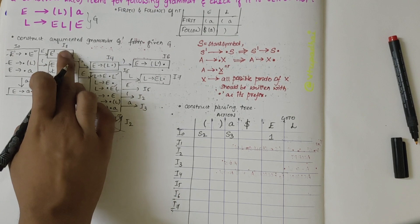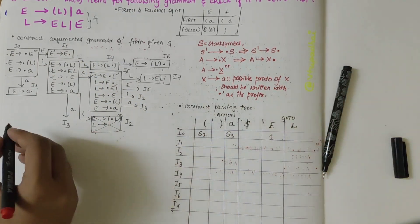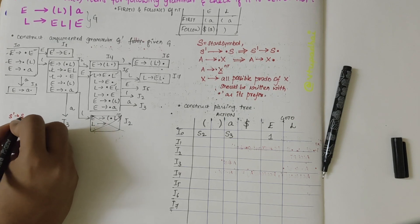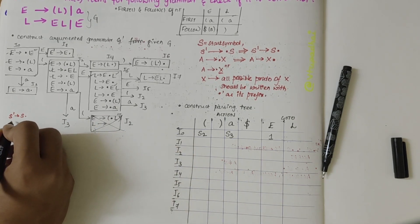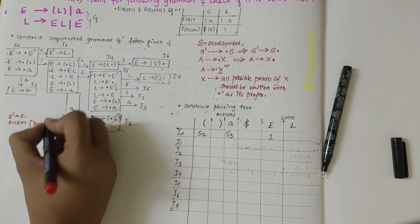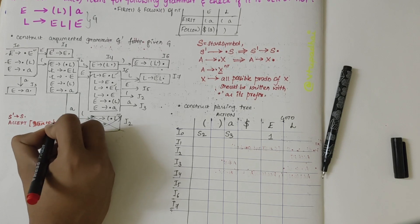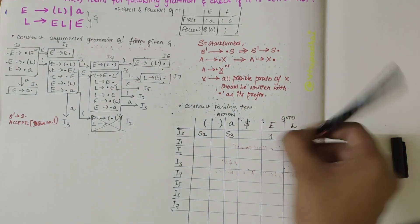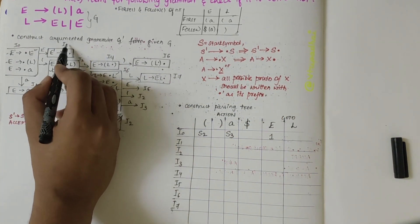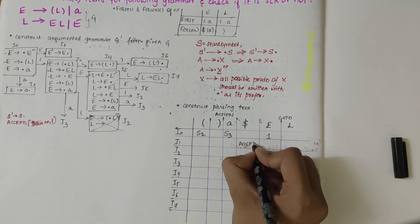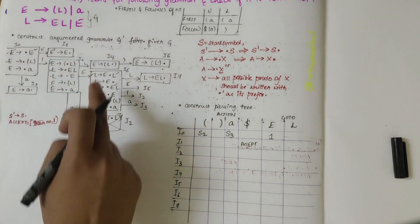Moving on to I1. One thing to remember: if you have a production of the form S dash derives S dot, then in action of that item number comma dollar, you should write accept. E dash derives E dot is in I1, so I1 over dollar you should write accept. We are done with I1.